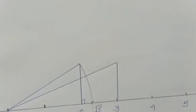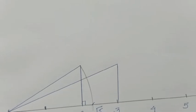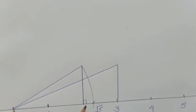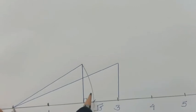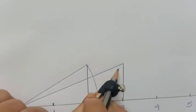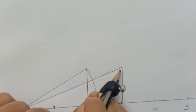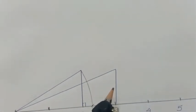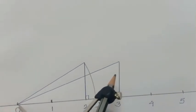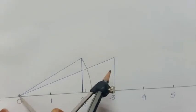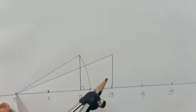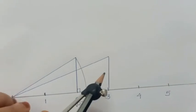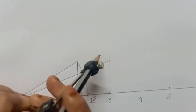Then again we join this perpendicular to 0. Afterward, we take the span of the distance from 0 to 3. Here 0 is the center, and we are taking as the radius the distance from 0 to the second perpendicular, where the second perpendicular is on 3.